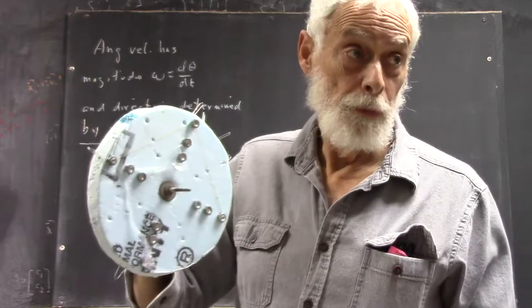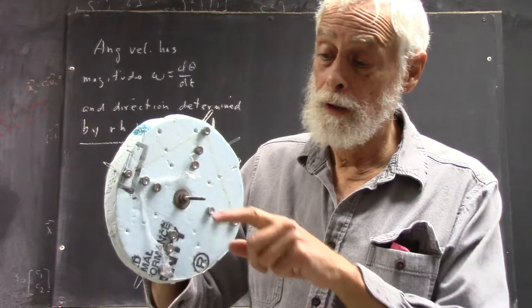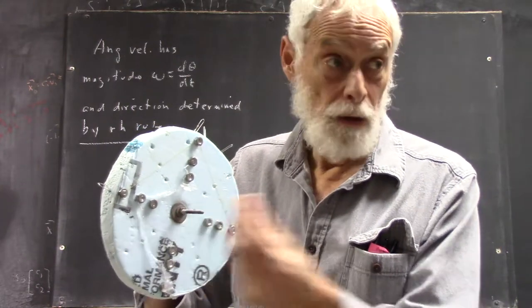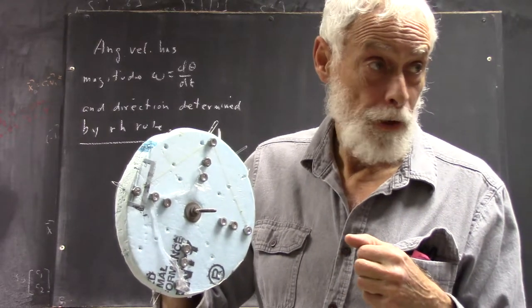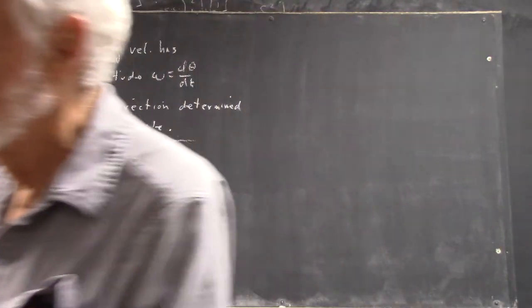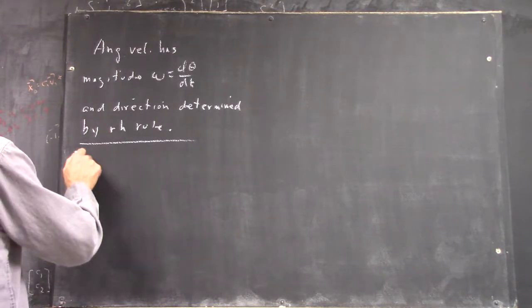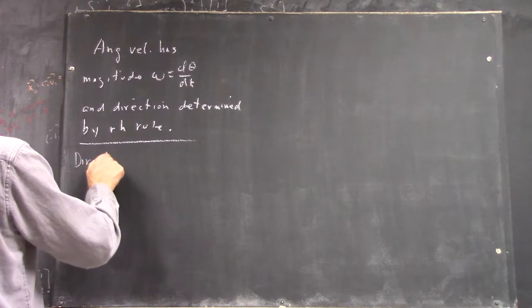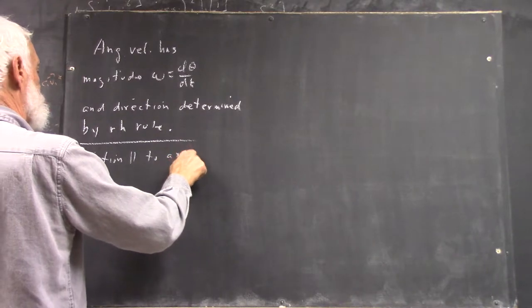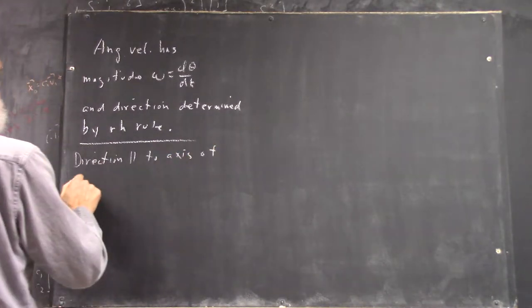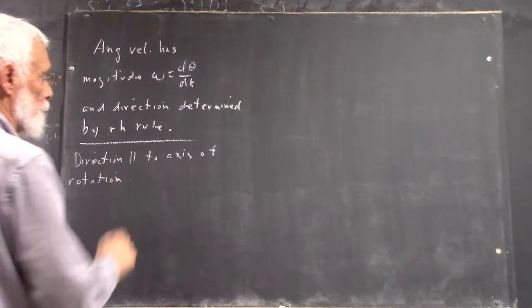That's the convention we use and it works out and we can justify it in all kinds of ways. But right now, let's just get used to the convention. And that turns out to be parallel to the axis about which it's rotating. So the right-hand rule turns out to be parallel to the axis of rotation.